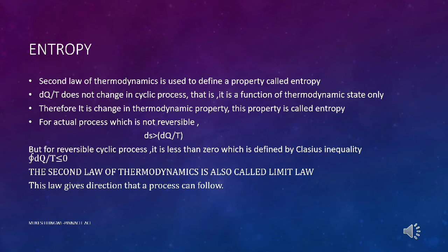Coming to entropy — the second law of thermodynamics defines entropy. The quantity dQ/T does not change in a cyclic process; it is a function of thermodynamic state only, and therefore it is a change in thermodynamic property. This property is called entropy. We cannot measure entropy directly; we measure the change in entropy. For an irreversible process, dS is greater than dQ/T, but for a reversible cyclic process the cyclic integral of dQ/T is less than or equal to zero — defined by Clausius's inequality. The second law is also called the limit law.